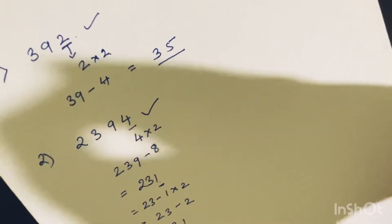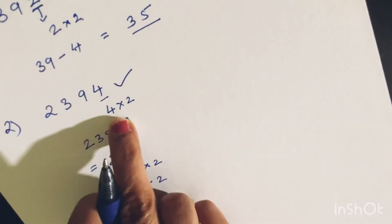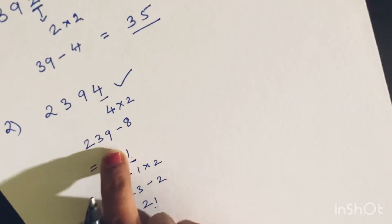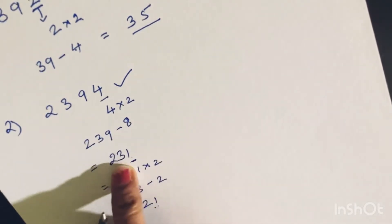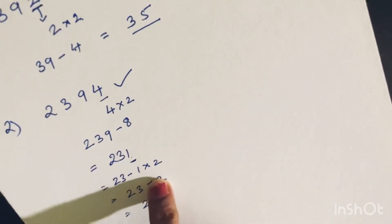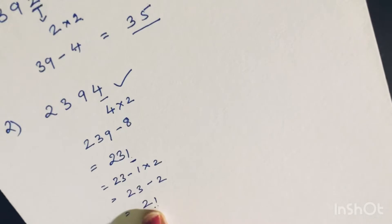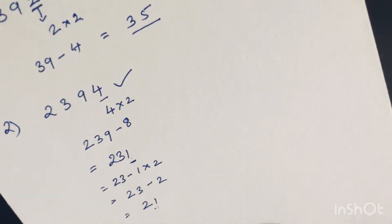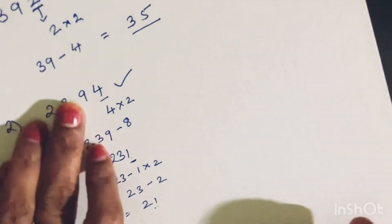So the divisibility test of 7 is quite simple: keep doubling the last digit and subtracting it from the rest of the number. If the result is still large, continue the same process until you get a number you can recognize as divisible by 7 or not. If the final result is 0 or a multiple of 7, the whole number is divisible by 7.